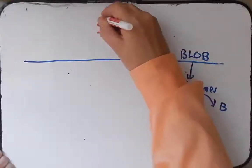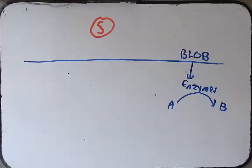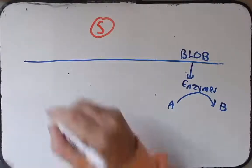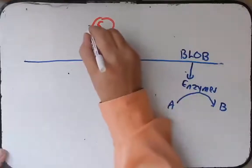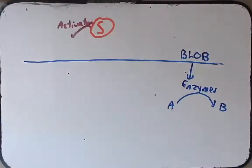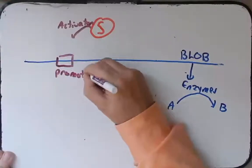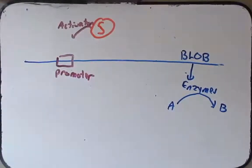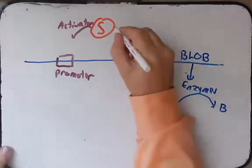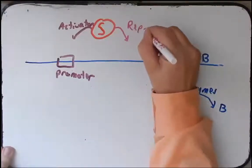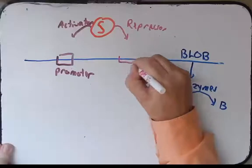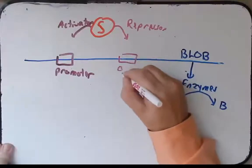It also tells us that there's a regulatory protein called S. S is either a repressor or an activator. The problem doesn't tell us, but we need to figure it out. We know that if it is an activator, it will bind to a promoter sequence, because that's what activators do. We also know if it's a repressor that it will bind to an operator sequence.